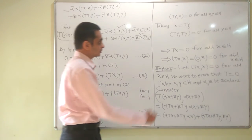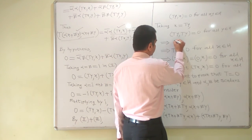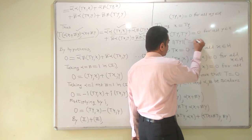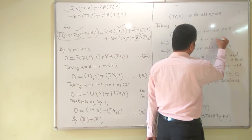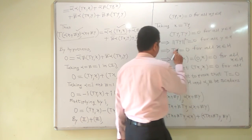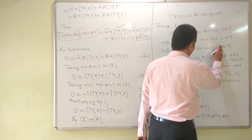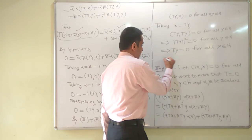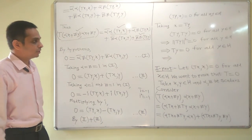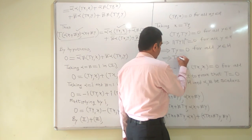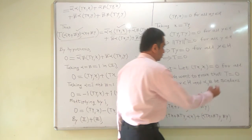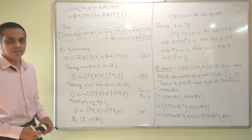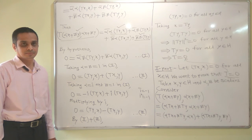This implies that the norm of Tx equals 0 for all y in H, and therefore Tx = 0. So the operator assigns the zero vector at each point, meaning it is the zero operator. Hence T = 0. This completes the proof of the second part. Thank you.